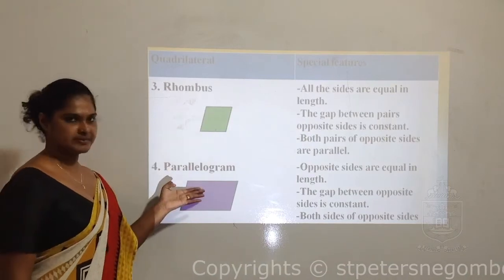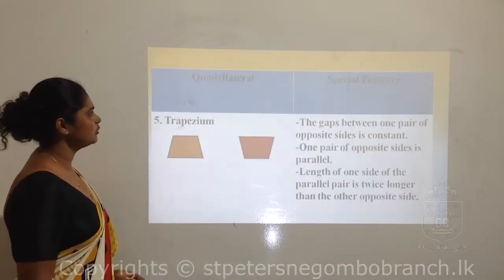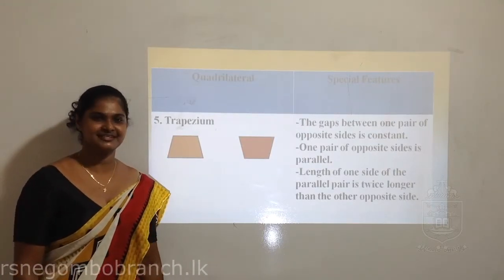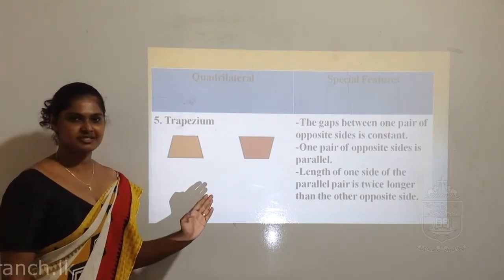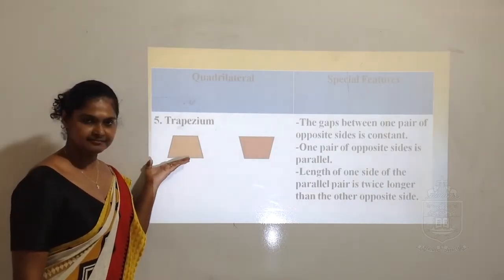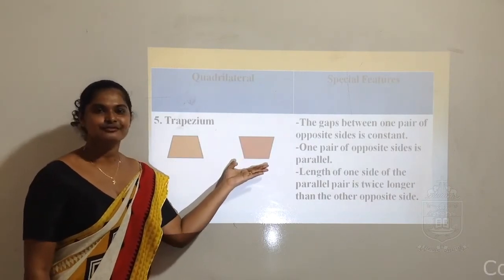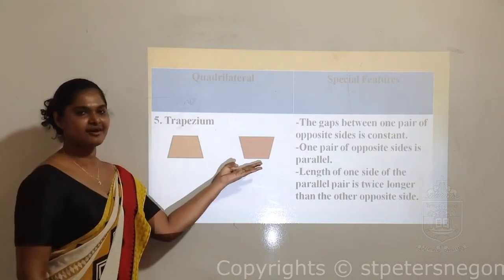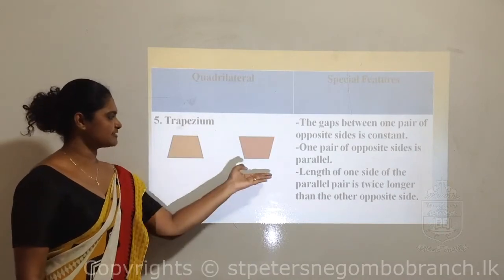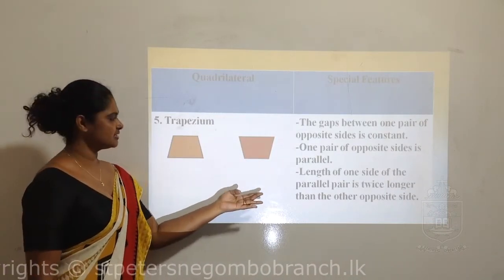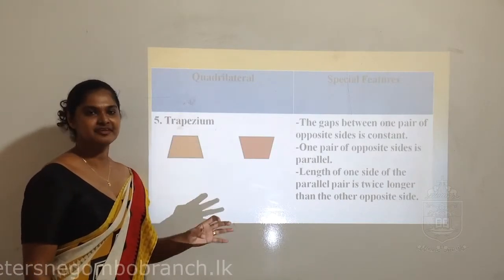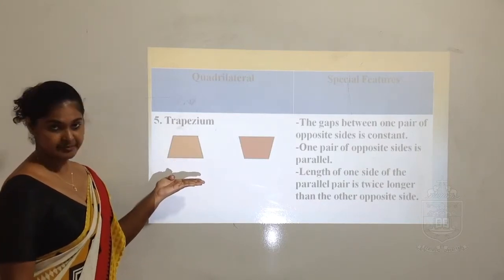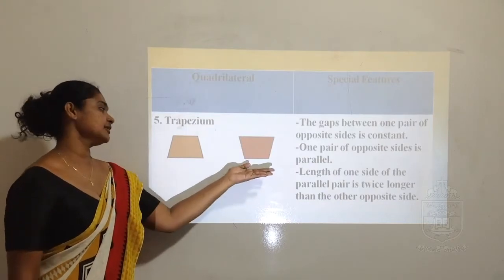We learned two different shapes - there is one more quadrilateral. What is this? Trapezium. It is a trapezium. This figure turned upside down also looks like a trapezium - both are the same figure. Trapezium can be represented in this manner or in this manner.